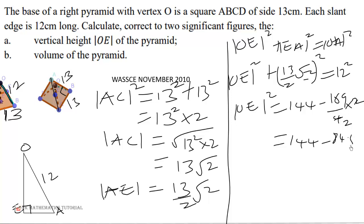84.5, so that will give us 59.5. So OE will be equal to square root of 59.5, which equals 7.7136.